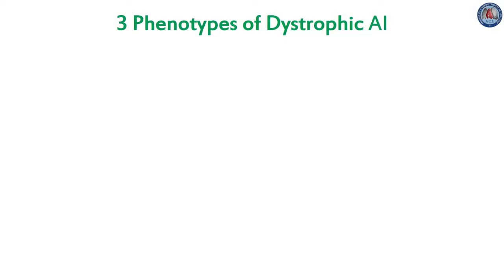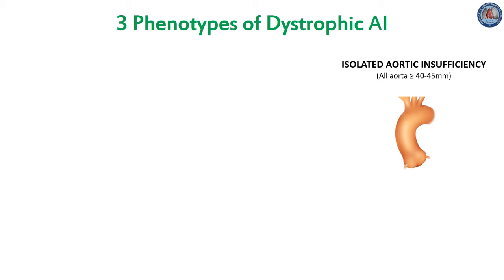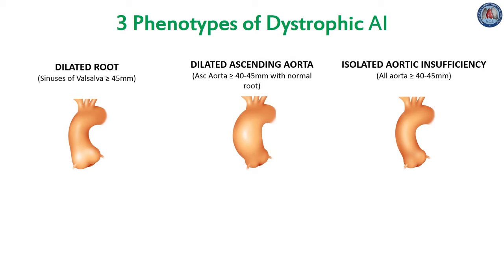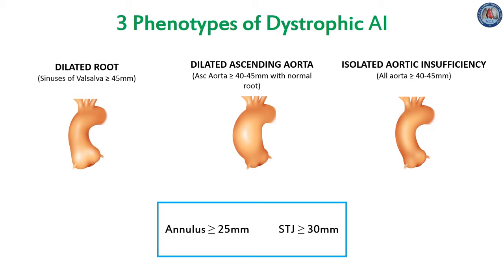Dystrophic AI is characterized by dilatation of the aortic annulus, sinuses, and/or sinotubular junction, preventing coaptation of pliable leaflets which may also be subjected to prolapse. Depending on whether the sinuses of Valsalva and/or the tubular ascending aorta are dilated, three phenotypes can be individualized. The first is a normal root and ascending aorta with all diameters being less than 40 to 45 millimeters — this is the case of isolated AI. The second is dilatation of the aortic root where the sinuses of Valsalva are more than 45 millimeters — this is the case of a root aneurysm. The third is dilatation of the ascending aorta. Dilatation of the annulus and STJ are almost constantly associated with any of these aortic phenotypes as a combined mechanism of AI.